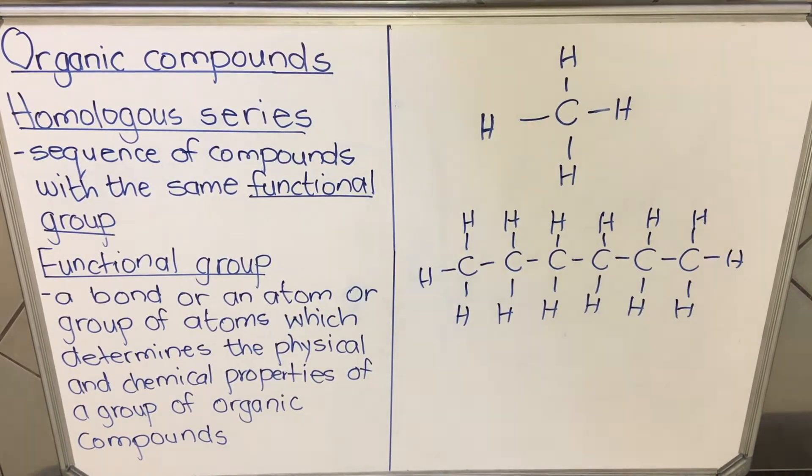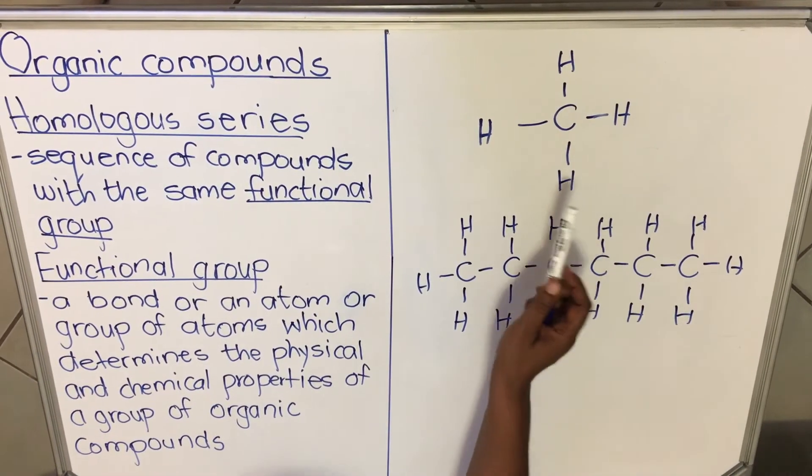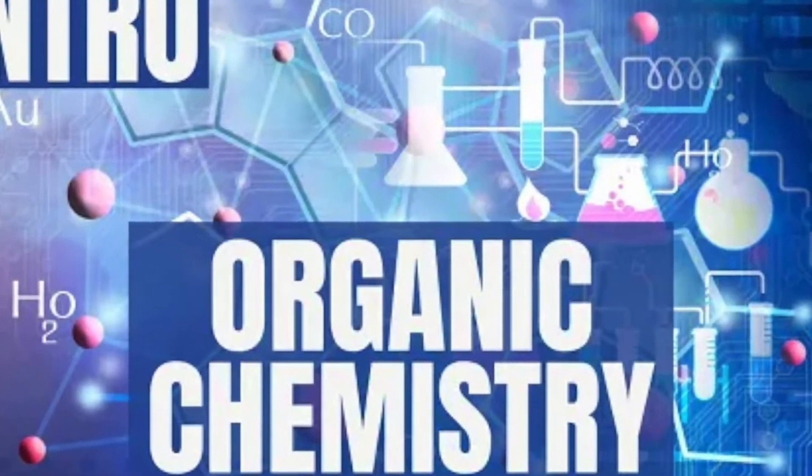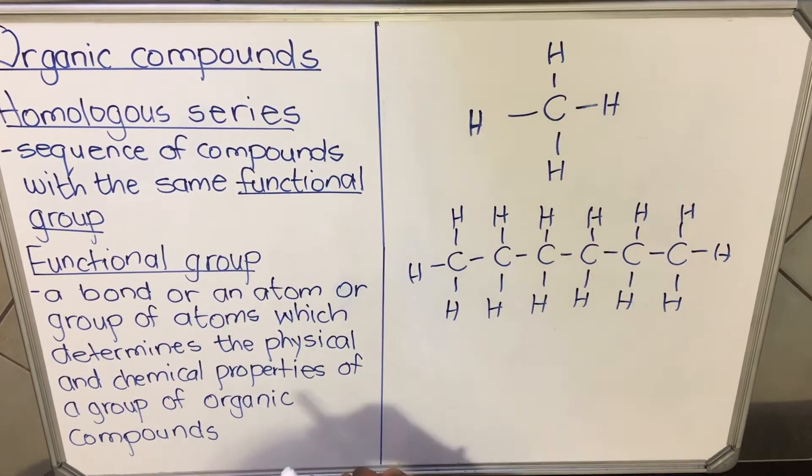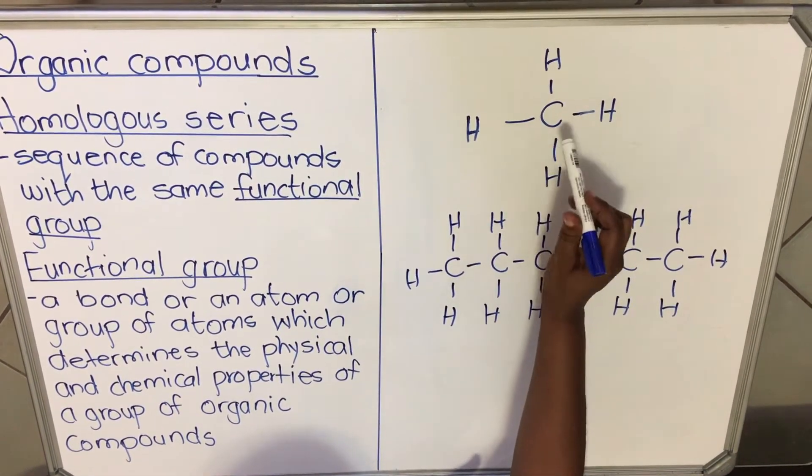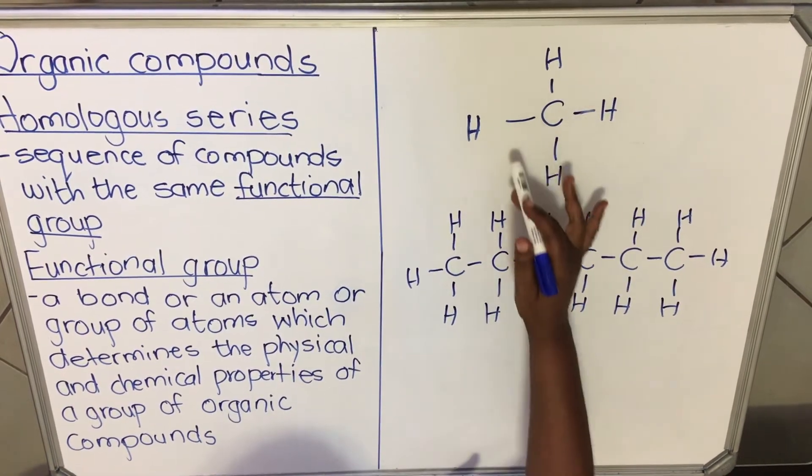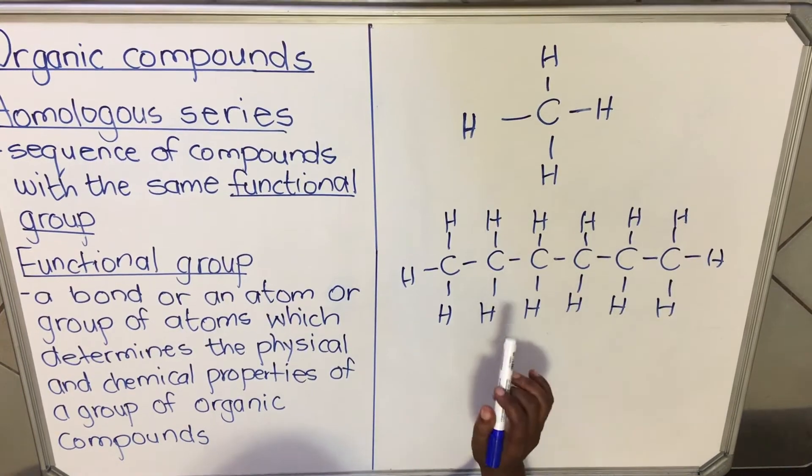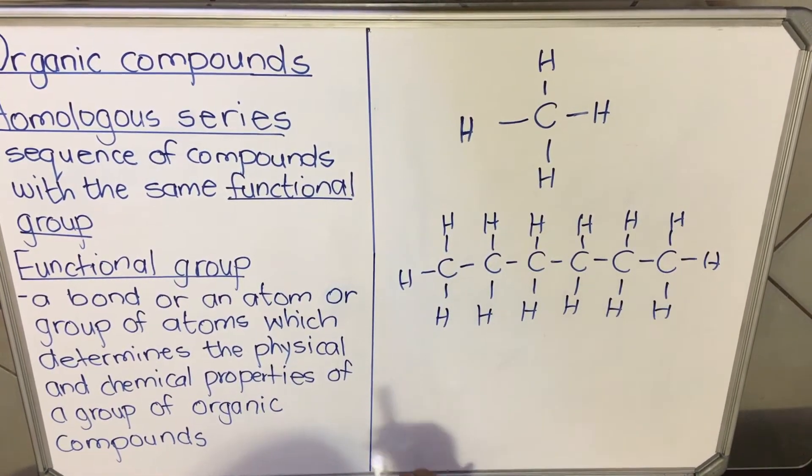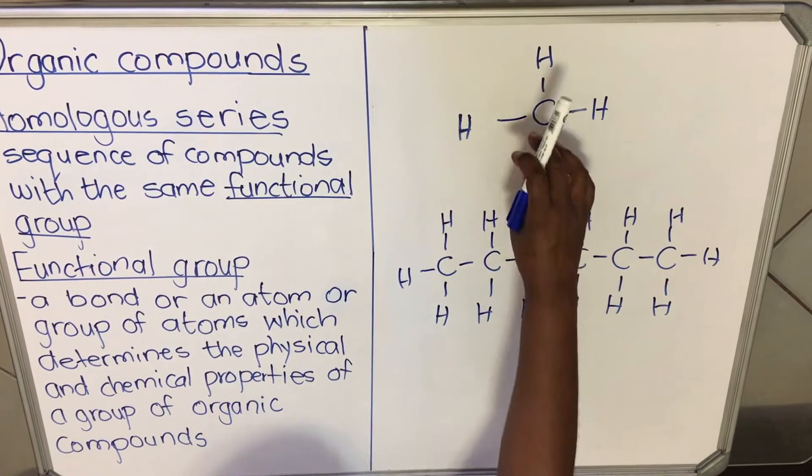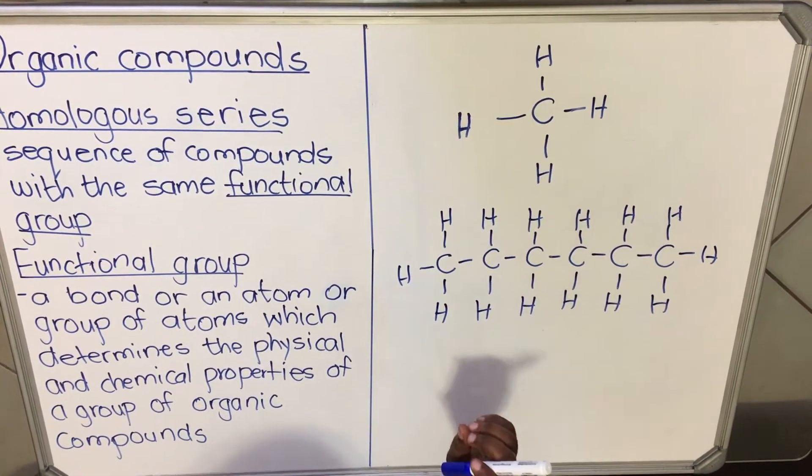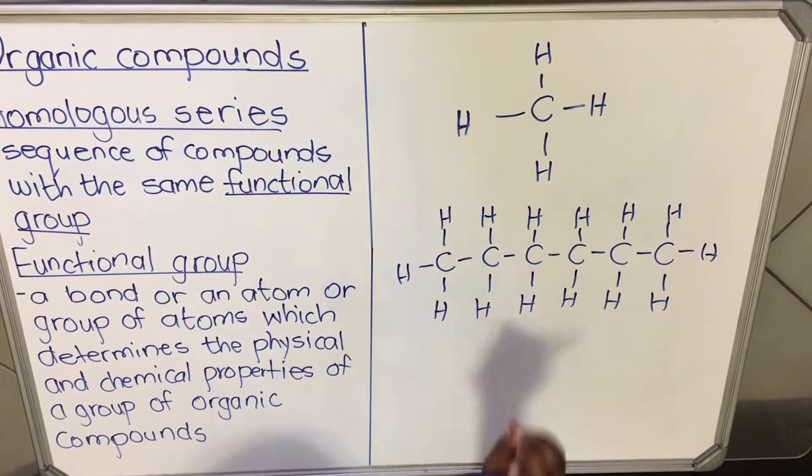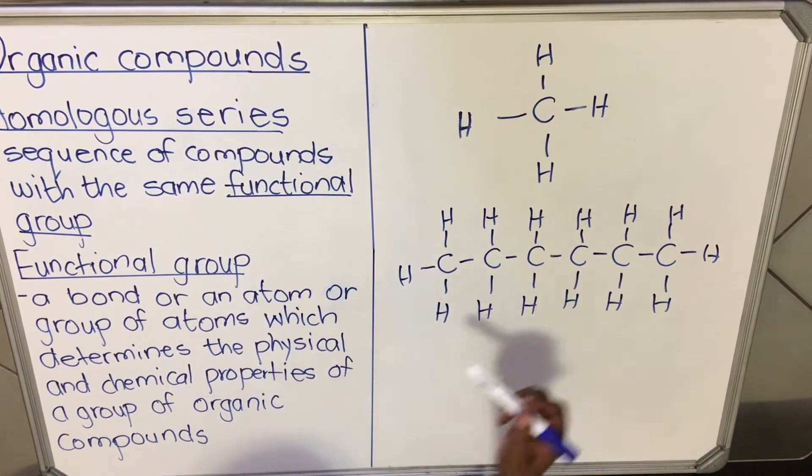So let's look at an example of a functional group and the homologous series. Here I have a compound. It has one carbon - you remember in our first video we talked about the number of carbons. It has one carbon that is bonded only with hydrogens. When you look at this compound, it has carbon only and hydrogens only and it has single bonds. When you look at this other compound, it has one, two, three, four, five, six carbons. So the name will be different compared to that one. It should have six - you remember in our first video one is meth and six is hex.